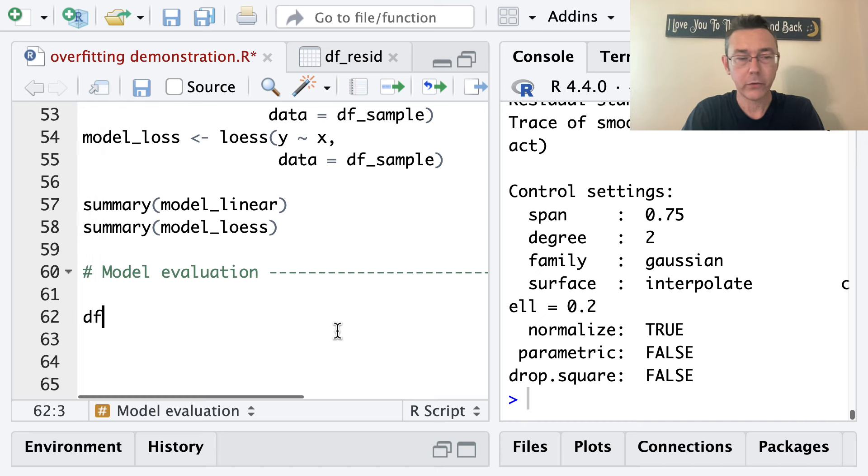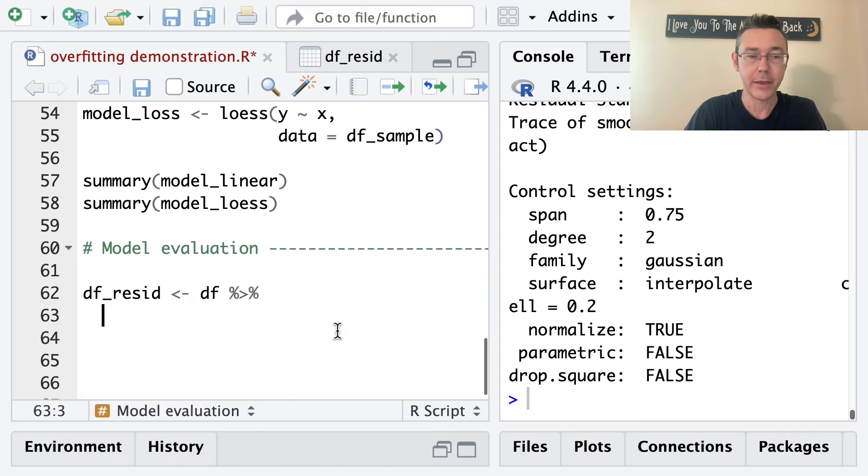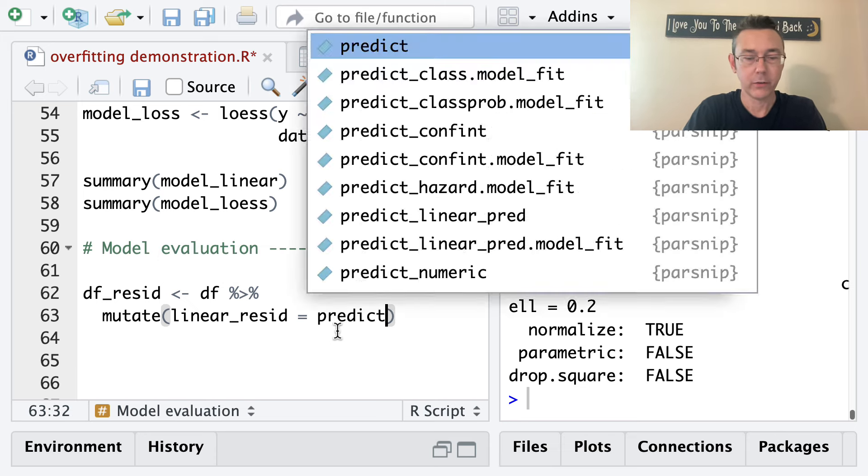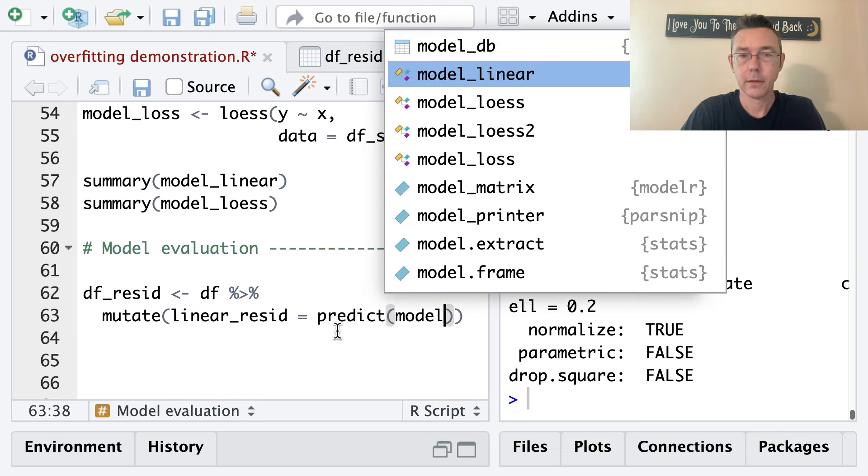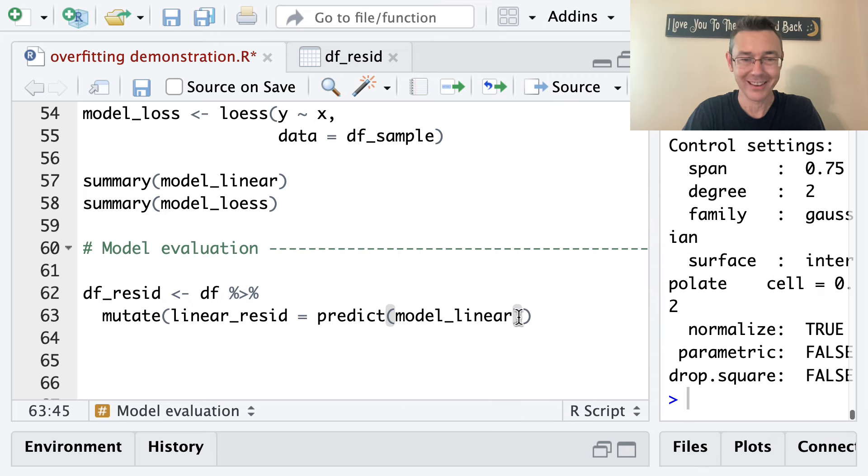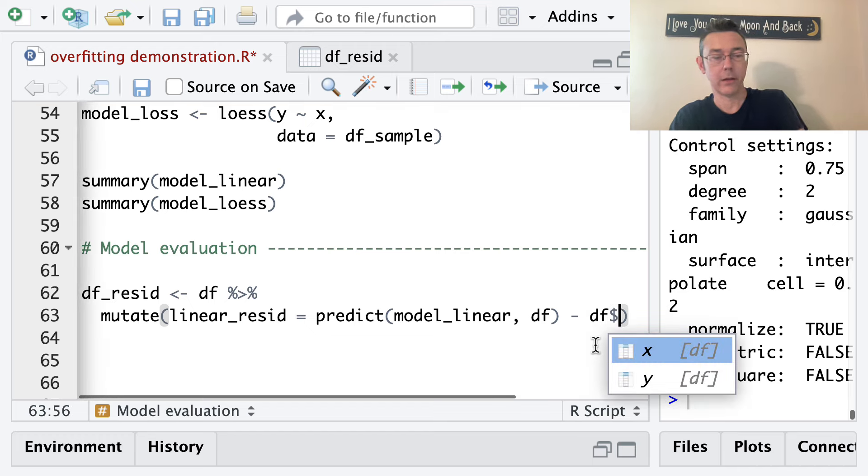But for the moment, let's actually just see how each of these two models is doing numerically on these two different sets of data. So I'm going to make a new set called df_resid. And what I want to do is I want to take the data set that I started with, the population data, df, and mutate it. And I want to put in two new columns. I want to have some linear residuals and I'm going to get some loess residuals. So for every observation in my data set, how far above or below that regression line or loess curve is it? So starting with the linear_resid, I want to predict using the model_linear.